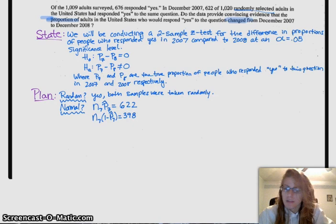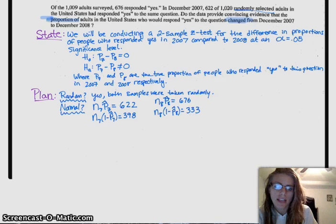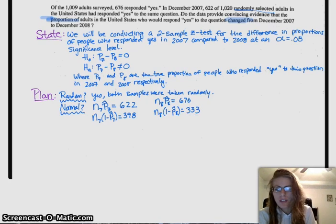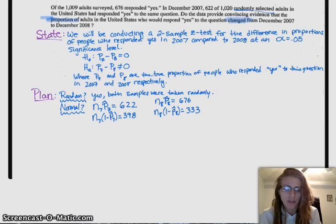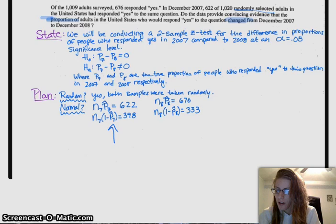So we have to check that n times P condition for both samples. For our first sample, 2007, n times P hat was 622, and n times 1 minus P hat is 398, and then we have to check that for the 2008 survey as well. So for 2008, n times P hat was 676, and n times 1 minus P hat was 333. Remember, this is checking only on your samples, not on your true proportions, because you're trying to test the true proportions. So these are all P hats.